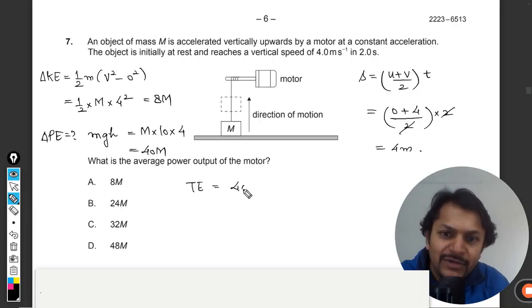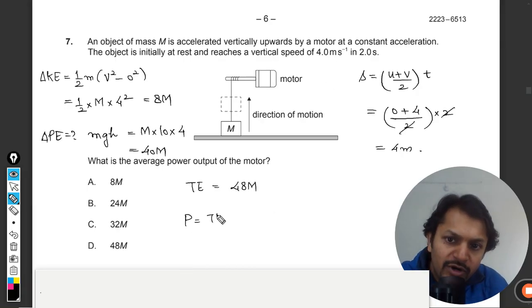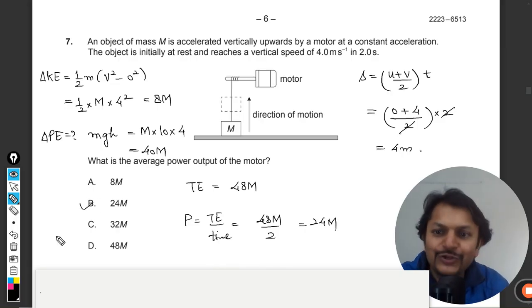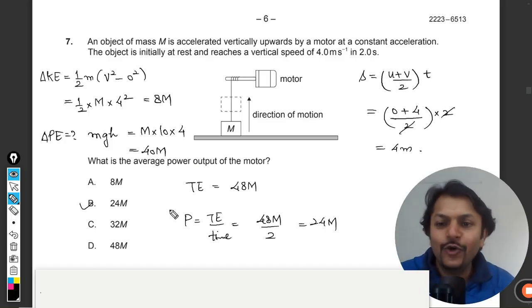We want to find the power. Power is total energy divided by time, which is 48m divided by 2 seconds. Our answer is 24m, so the answer is B. Let's verify from the mark scheme. Yes, for question number 7, the answer is B.